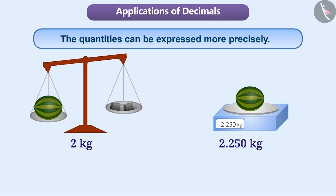As you can see, the weight of the watermelon is expressed more accurately as 2.250 kilograms as compared to 2 kilograms. Now, let's look at the use of decimal numbers in some examples.